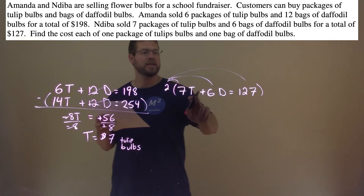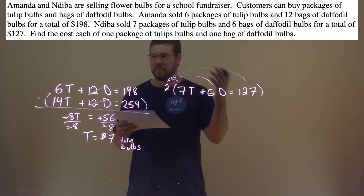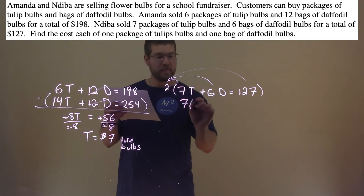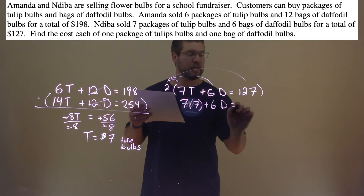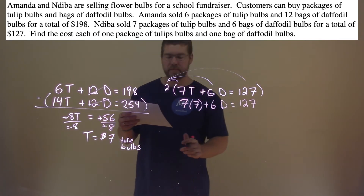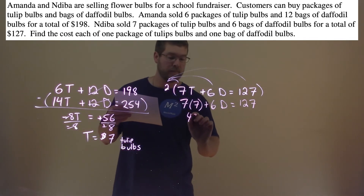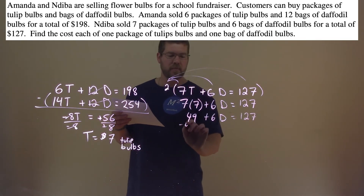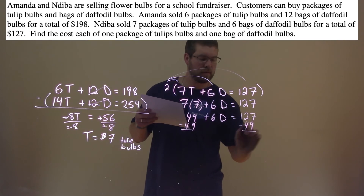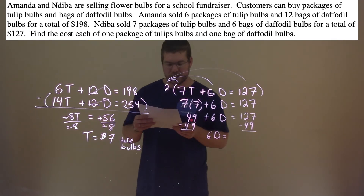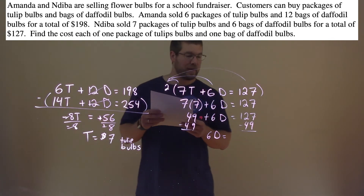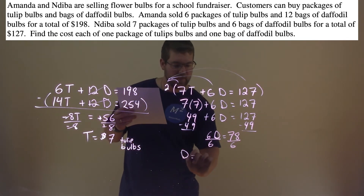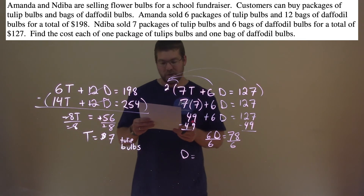Now we're going to take that information and plug it into the equation without the multiplication of 2, because it's just easier. So we have 7 times the price of a tulip, which is 7, plus 6d equals 127. 7 times 7 is 49, plus 6d equals 127. Subtract 49 from both sides: 6d equals 127 minus 49, which comes out to be 78. Divide both sides by 6, and D equals 78 divided by 6, which is 13.